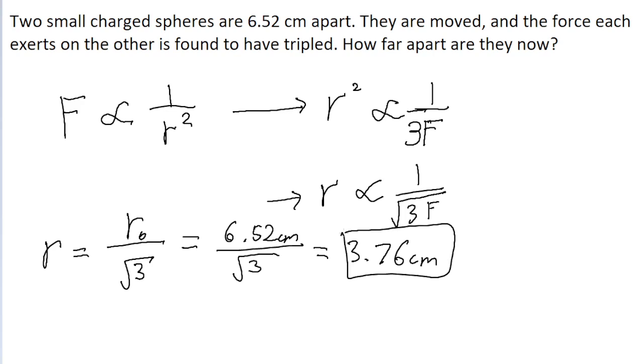The two particles have gotten closer together, which makes sense because electrostatic force gets stronger as particles get closer. Since the problem tells us the force is increasing, we should have expected a smaller distance, and sure enough, that's exactly what happened. That's it for this problem.